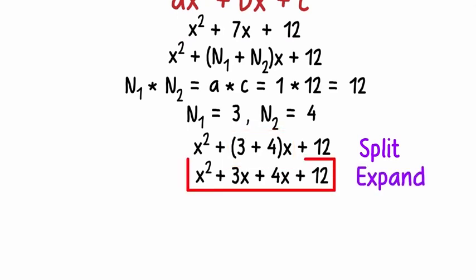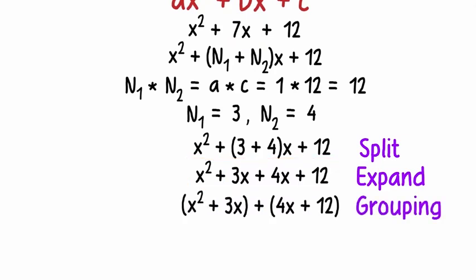So the polynomial can be written like this. The middle term after expansion will look something like this. What we have done here is split the middle term. 7x was written as 3x plus 4x, and how does this help?